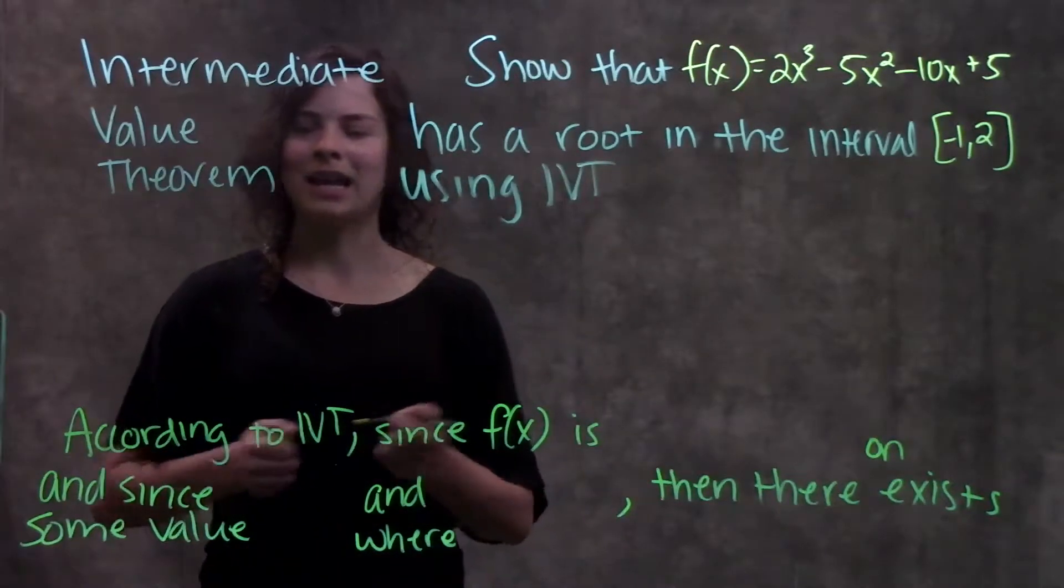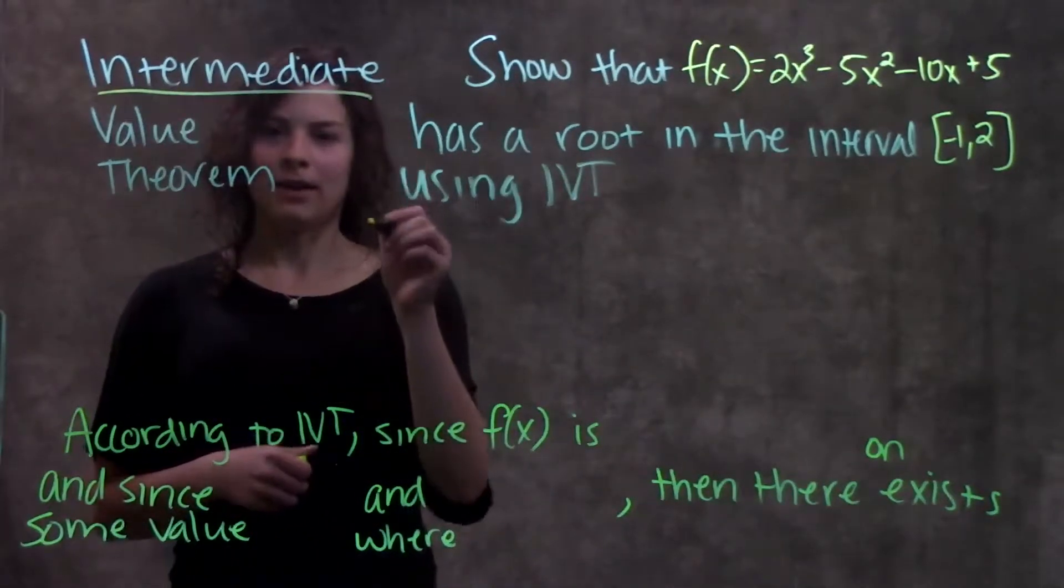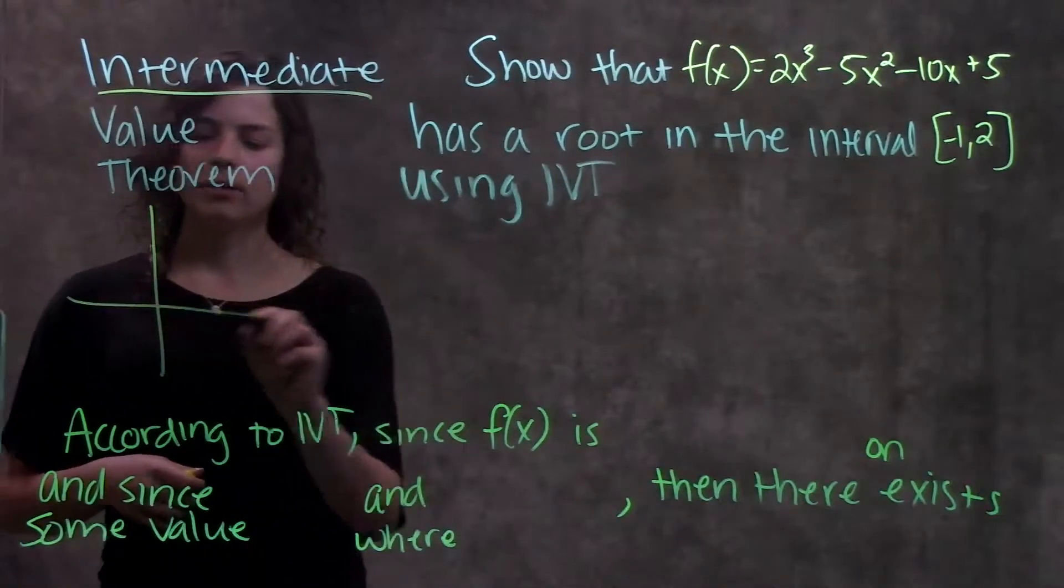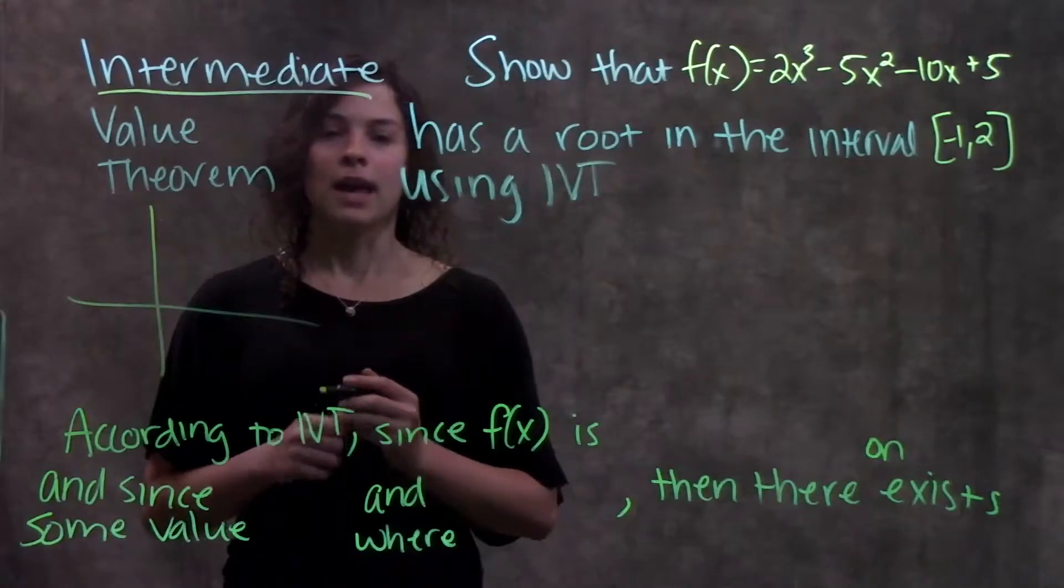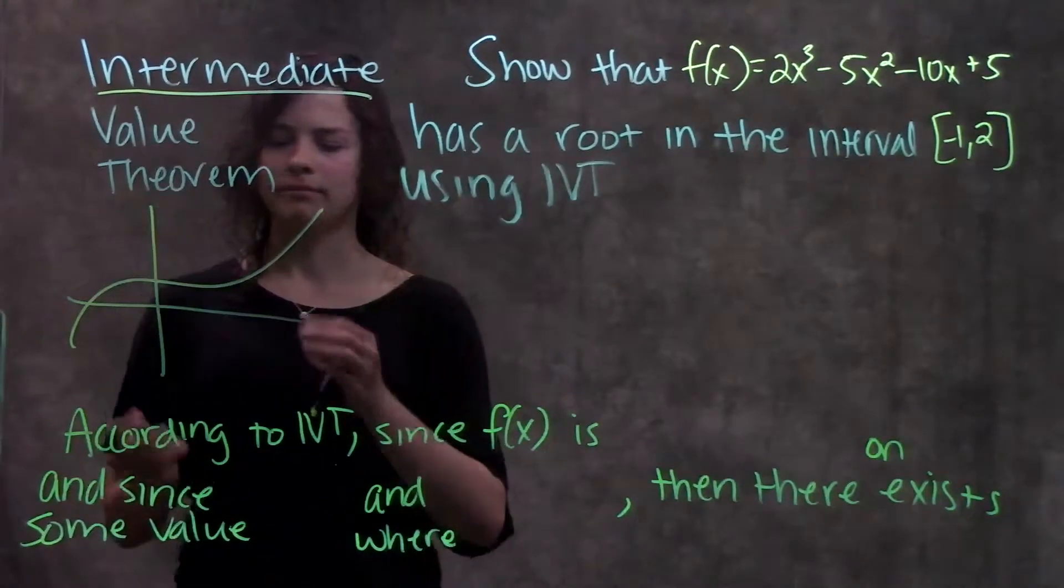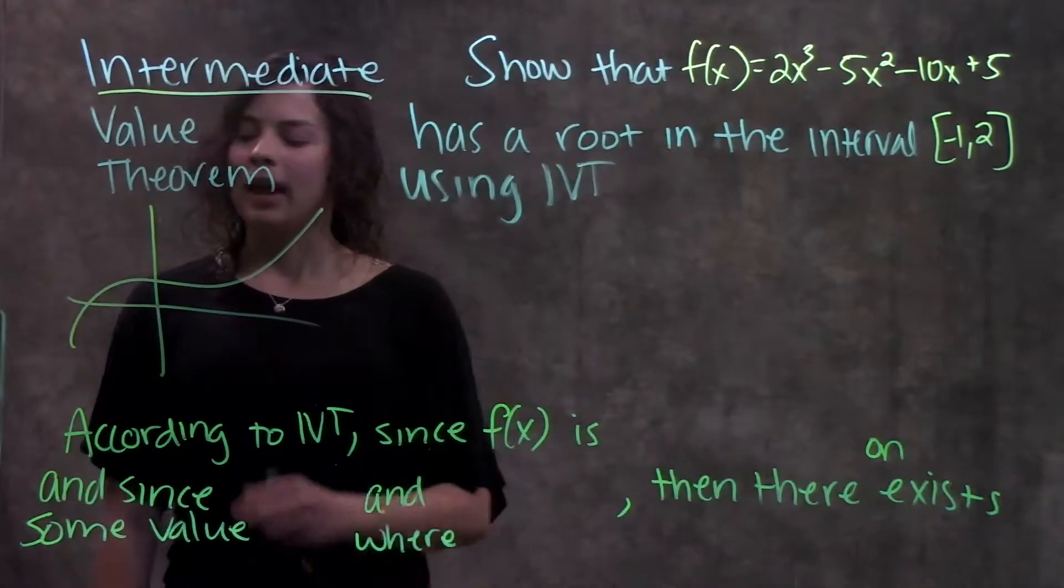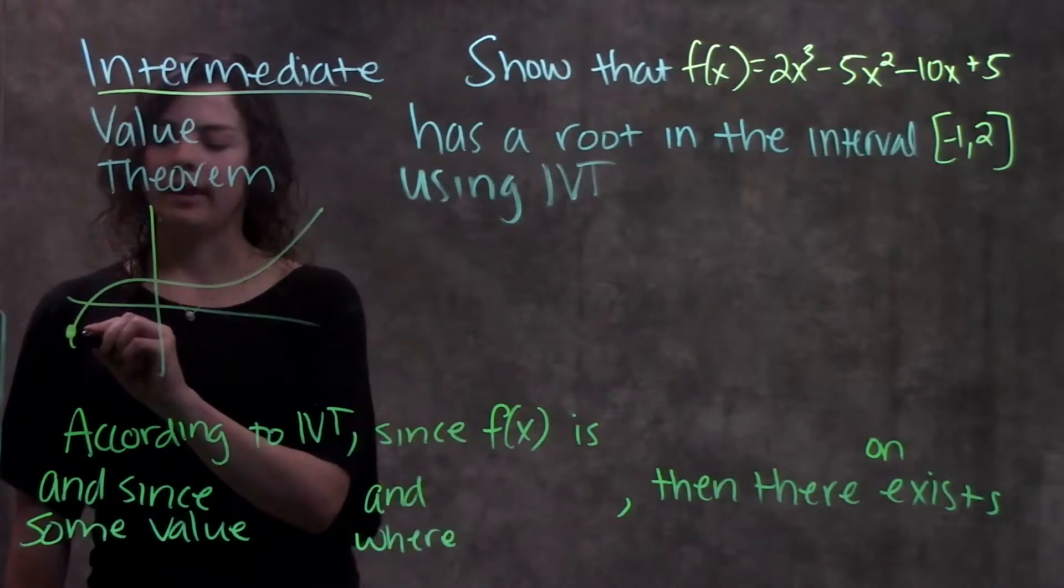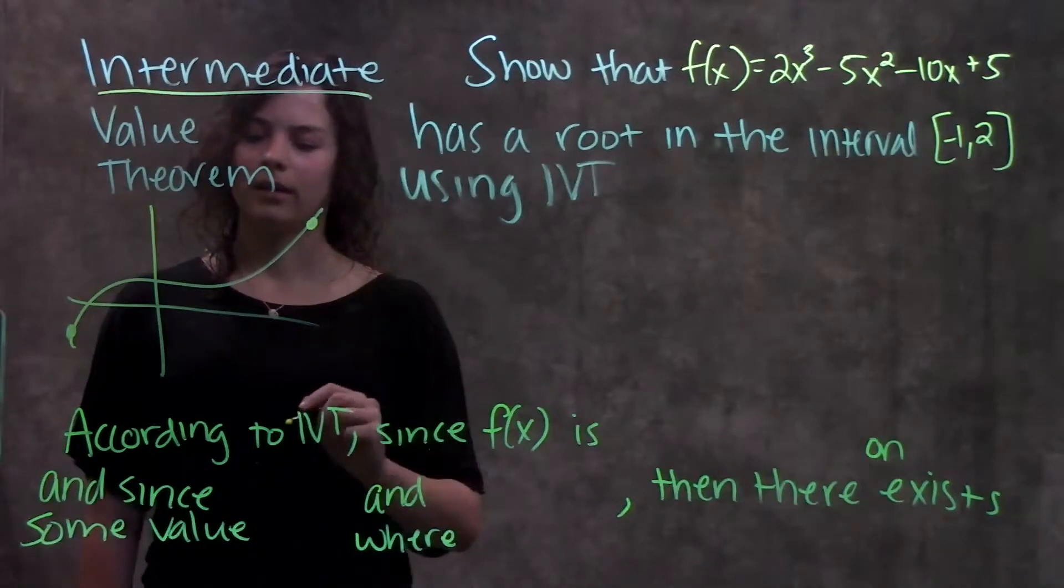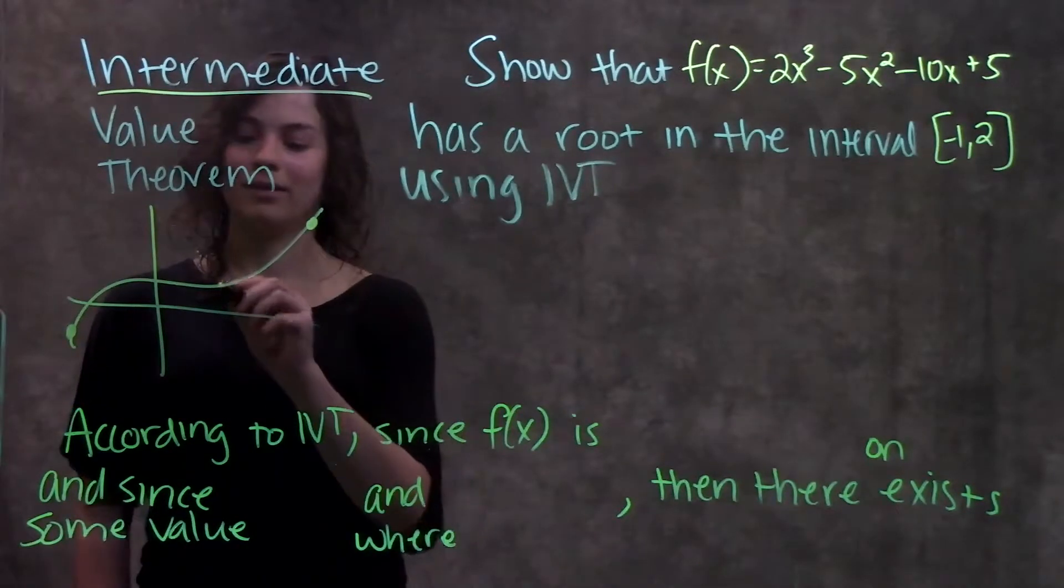Intermediate Value Theorem, it says it in the name. It's interested in the intermediate value, or some value in the middle. What Intermediate Value Theorem says is that if we have a function that's continuous, that's the first point, it has to be continuous like this, and there's some value down here and later some value up here, then there must be some value in the middle that's here.